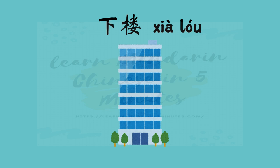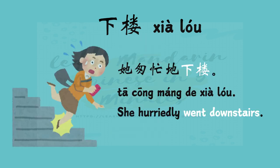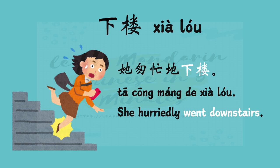The next phrase we are looking at is 下楼. 楼 by itself means a building that has more than one story or floor. So 下楼 literally means down floor, but we say downstairs. Sentence example: 她充忙的下楼 — she hurriedly went downstairs.